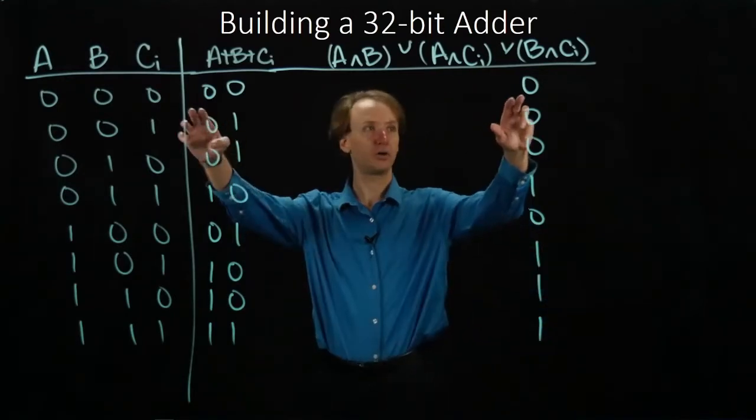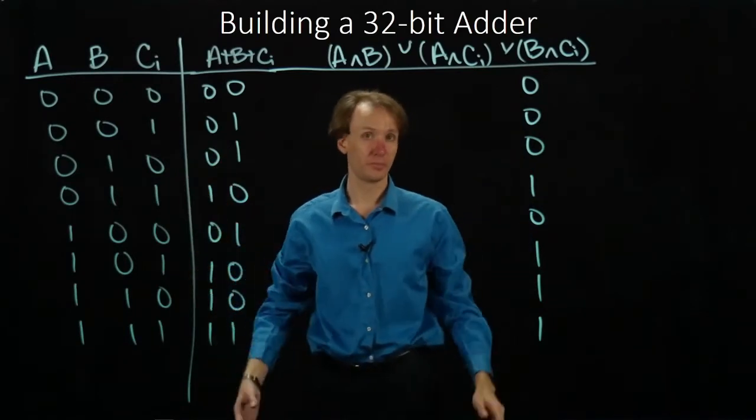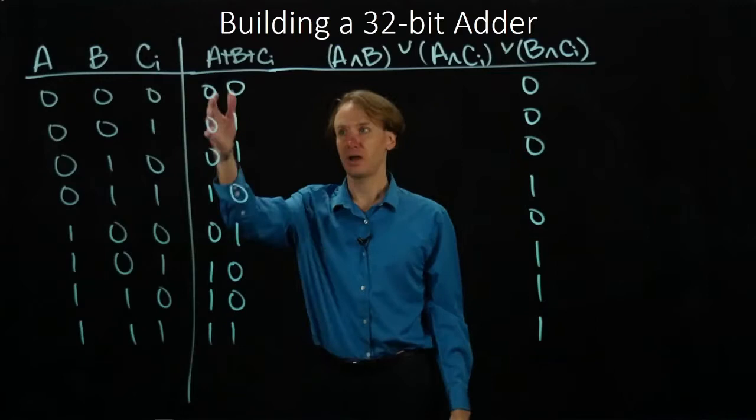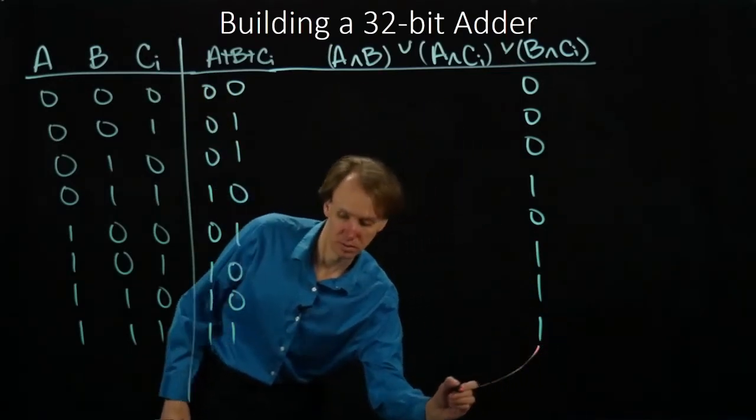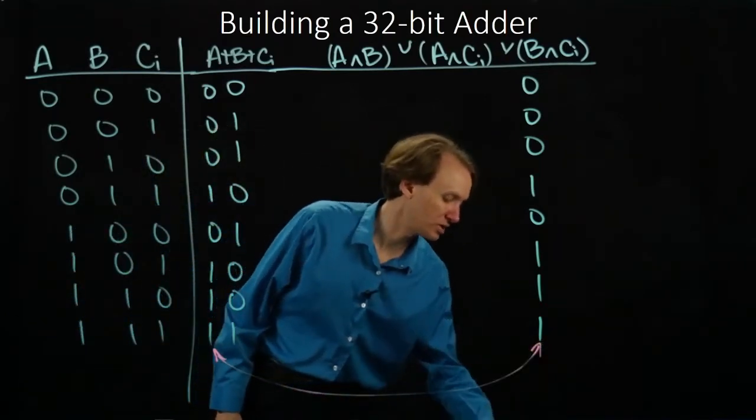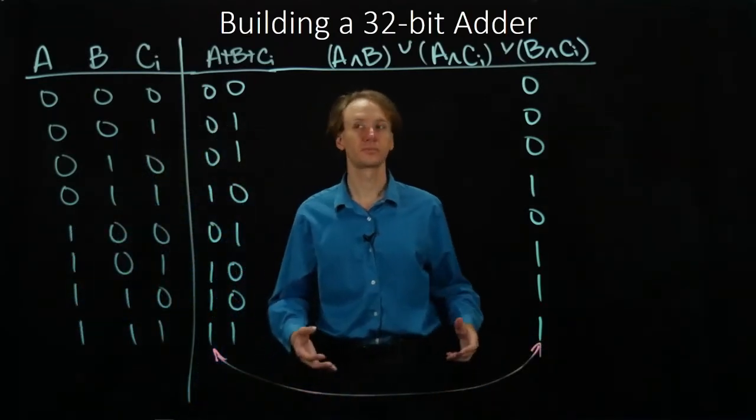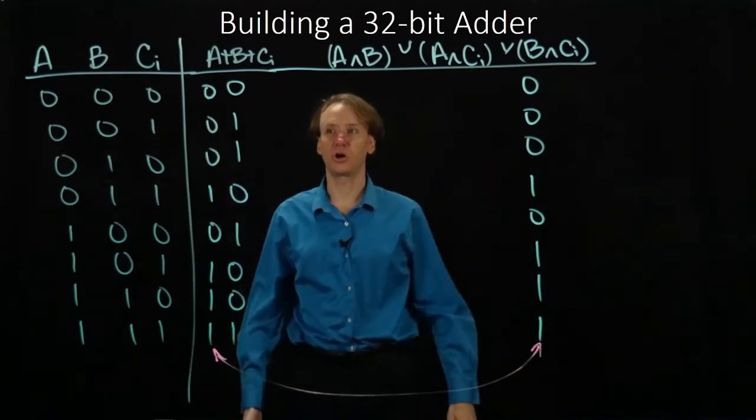So I can look: 0, 0, 0, 1, 0, 1, 1, 1. This line matches up with this column, so I can say that these two are logically equivalent. Which is great. I found a way to do one of my two columns.